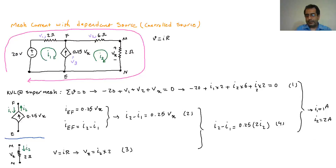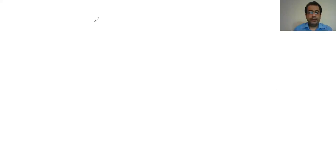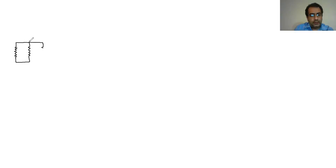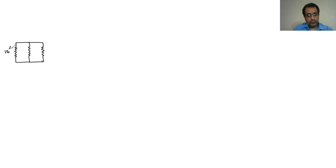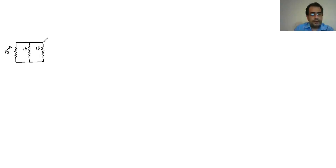Let's look at another example — the last example for mesh current — which is more general and has almost everything in it. Assume I have a circuit with three resistors, each 15 ohm. These are also 15 ohm each, giving us three 15-ohm resistors in parallel.